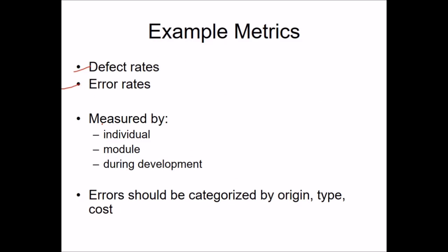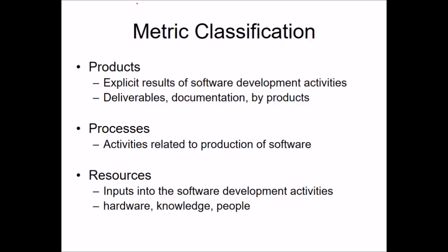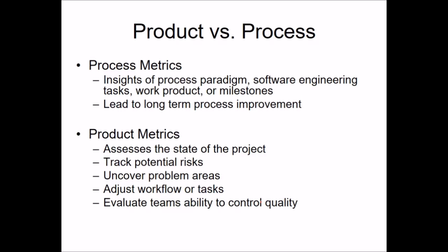For example, we have defect rates and error rates measured by individual module or during development. Errors should be categorized by origin, type, and cost — this is how we compute defect and error rates. There are three metric classifications: product metrics, process metrics, and resource metrics. Product metrics represent the explicit results of software development activities — the deliverables, documentation, and by-products. Process metrics cover activities related to software production, and resource metrics cover inputs to the development activities.